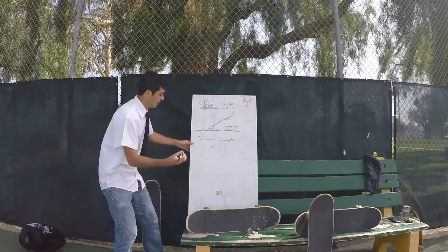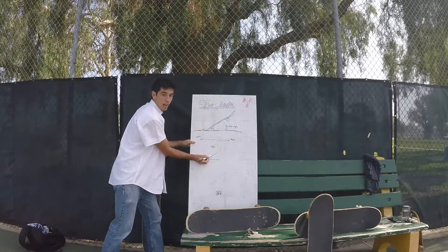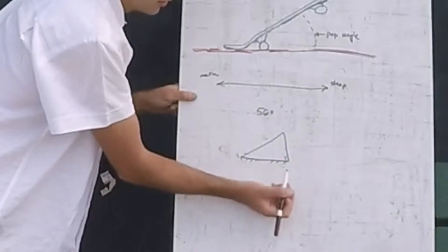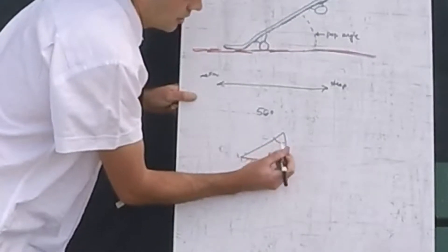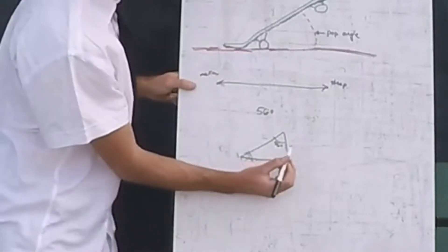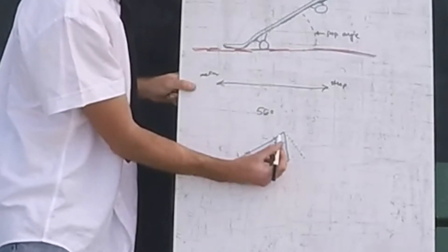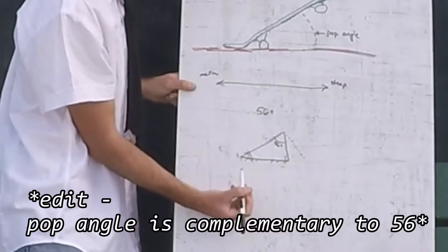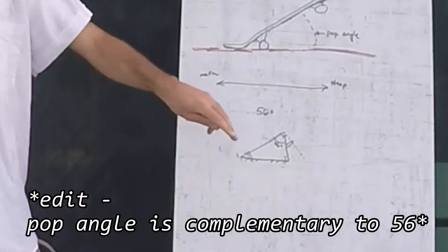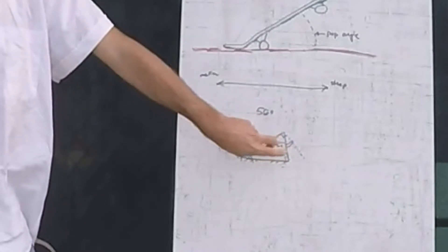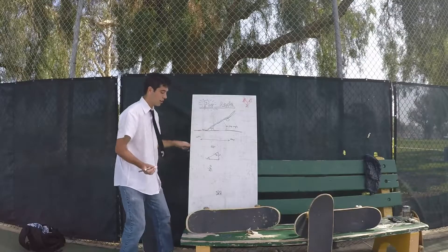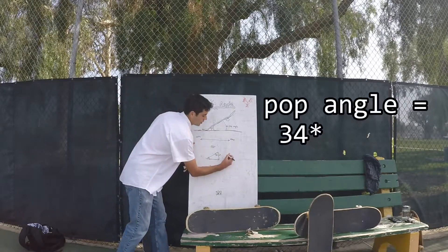So what that angle is — let's draw out a little triangle here where this line is our board, this line is the ground, and this line is a vertical line perpendicular to the ground. 56 degrees is that angle. Now we know that this angle is our pop angle, and that angle is complementary to the hypotenuse of our triangle. Those two angles are the same, and since they are complementary, these two angles add to 90 degrees. 90 minus 56 is 34, so for this board, it has a pop angle of 34 degrees.